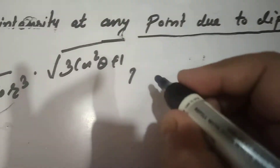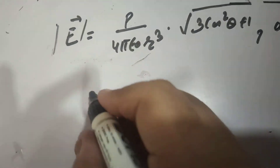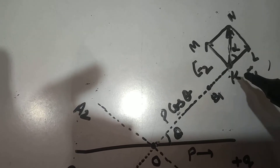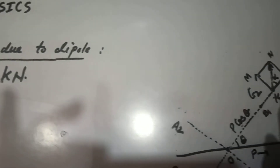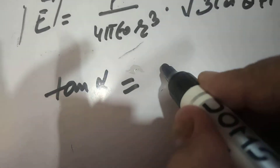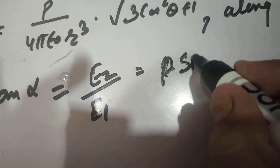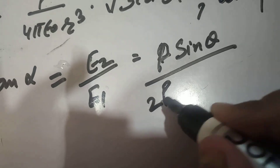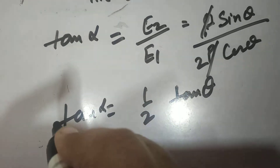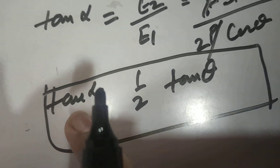Now we can find the direction of E using the relation tan alpha. Tan alpha can be calculated from this triangle as the perpendicular over the base, which gives E2 by E1. E2 is equatorial P sin theta and E1 is 2P cos theta. The P cancels out, giving tan alpha equals tan theta divided by 2, so tan alpha equals one half tan theta. If we know the value of theta, we can find out alpha.